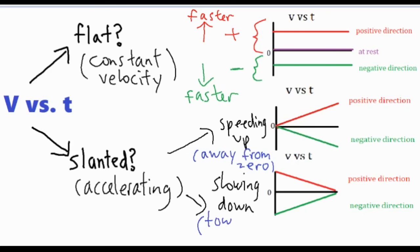For slowing down, the line is moving towards zero. Be very cautious about quickly assuming a positive slope means speeding up, because in some cases it does and in some cases it doesn't. Any graph slanting away from zero is speeding up, and anything slanting towards zero is slowing down. That pretty much covers velocity versus time graphs — just check whether the line is flat or slanted, and if slanted, whether it's moving away from or towards zero.